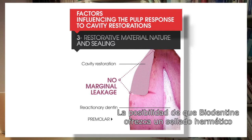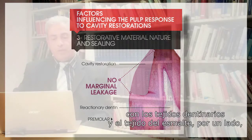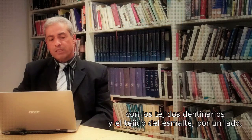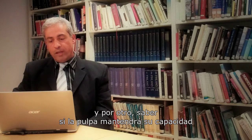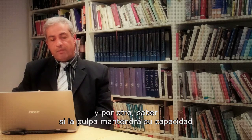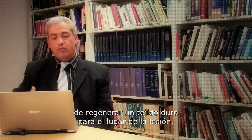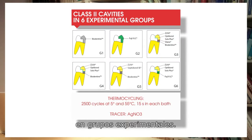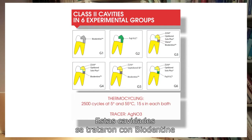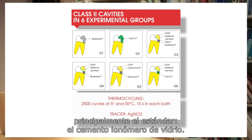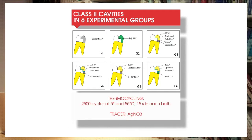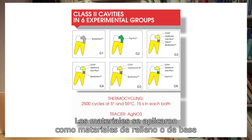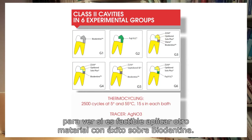First, the possibility that Biodentine has to provide a hermetic seal with the dentin and enamel tissues; and second, whether the pulp can maintain its capacity to regenerate hard tissue facing the injury site. To do so, we prepared cavities in experimental groups treated with Biodentine, but also with other materials — mainly the gold standard, which is glass ionomer cement. The materials were applied as filling materials or as liners together with different bonding agents to see if different materials can be successfully applied over Biodentine.